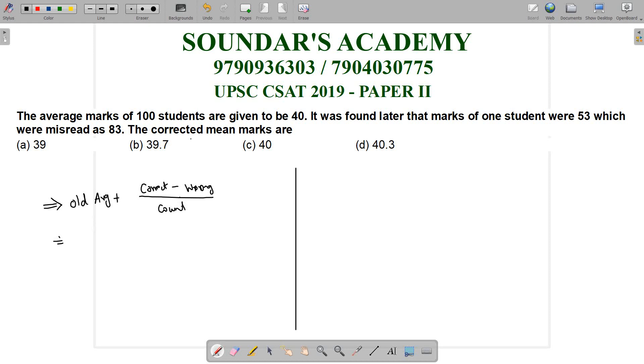Correct mark minus wrong mark divided by count. Old average 40 plus correct mark. One student was 53 which was mistreated as 83. Correct mark means 53.